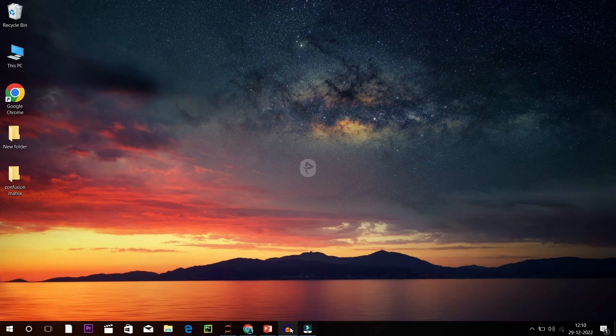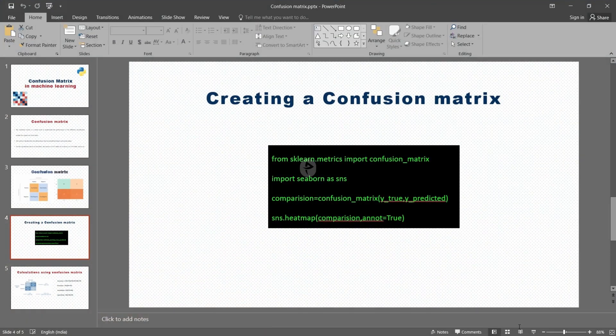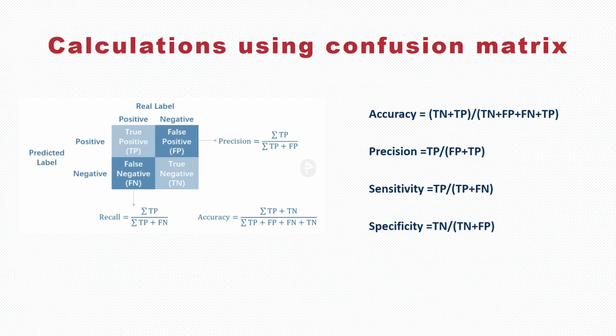Also, there are other features in confusion matrix. With the help of confusion matrix you can actually calculate some parameters. You can calculate accuracy, precision, sensitivity, and specificity. Here TN and TP represent true negative and true positive, and FP and FN represent false positive and false negative. From this graph we can actually calculate these values such as accuracy, precision, sensitivity, and specificity.